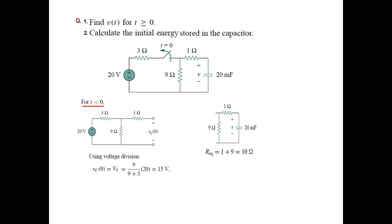So our equivalent is 10 ohm and tau is 10 times 20 millifarad or 20 into 10 to the power minus 3 that gives 0.2 seconds.